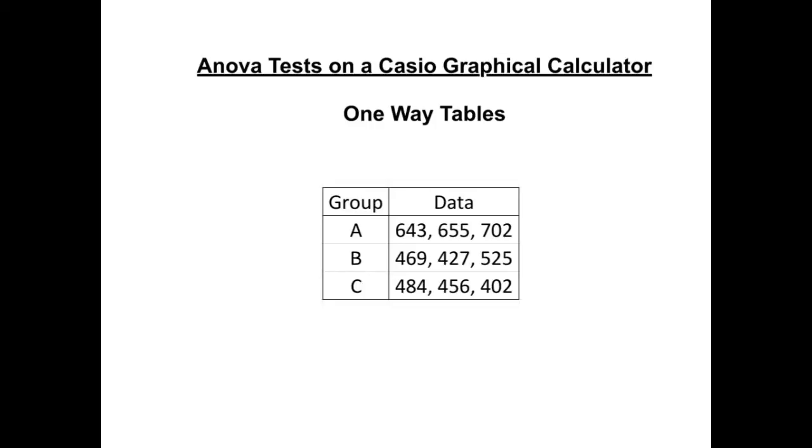The main difficulty in getting it to do an ANOVA test is showing the calculator exactly where the data is that you want. So here we've got three different groups and all of the data that we're associating with them. We need to be very careful when we enter this so the calculator knows exactly which group the information is coming from.